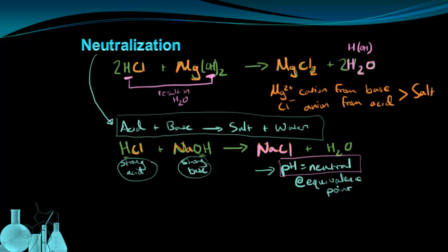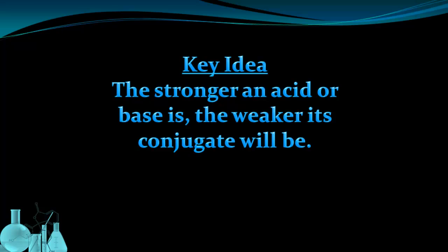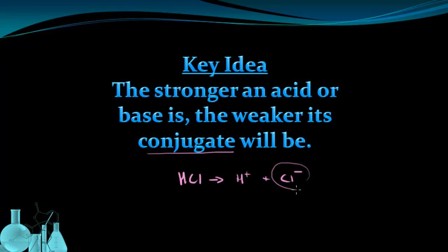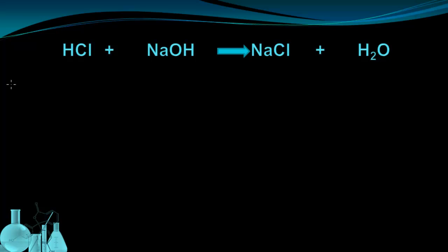To understand what's happening, we have a key idea: the stronger an acid or base is, the weaker its conjugate is. The conjugate is essentially what's formed or left over after the reaction proceeds with an acid or a base. So when HCl gives H⁺ into solution and leaves Cl⁻ behind, Cl⁻ is the conjugate — in this case, the conjugate base because it came from an acid. Our acid is HCl, and we know that HCl in solution dissociates into H⁺ and Cl⁻ ions, making Cl⁻ the conjugate base.